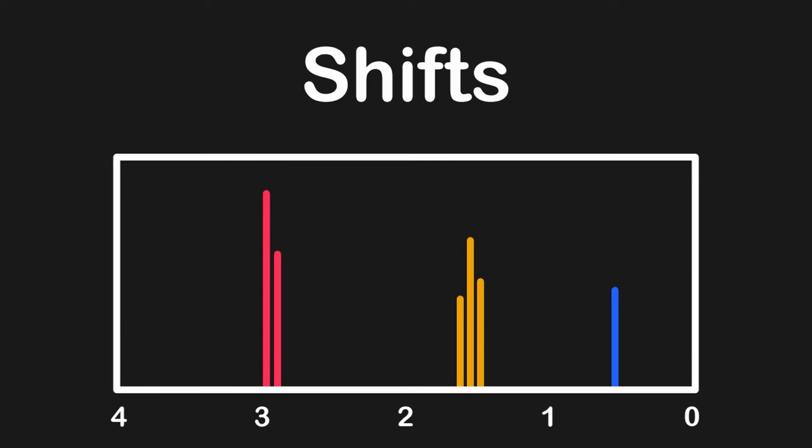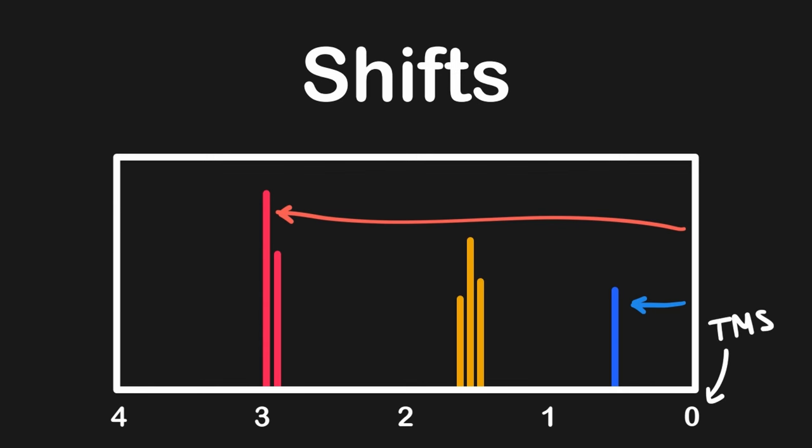Now that we have discussed signals, splits, and integration, we will turn to shifts, or how far away a signal is from zero. Shifts are measured in comparison to a baseline molecule called TMS, which always shows up at zero. These shifts are dependent on two molecular features: electronegative atoms and unsaturated groups. When these groups are present, they deshield or pull electron density away from nearby hydrogens, moving that hydrogen's signal to the left, or downfield, on the NMR spectra.